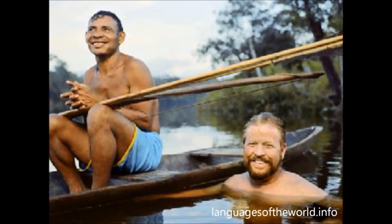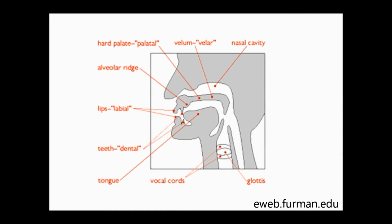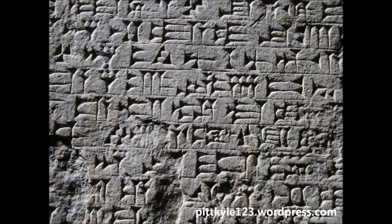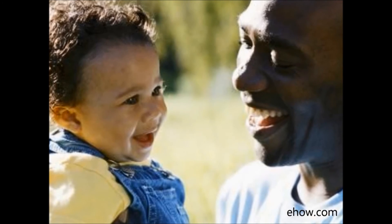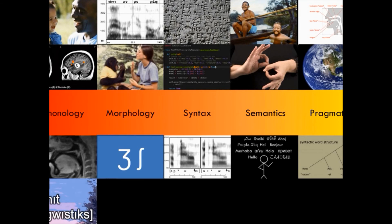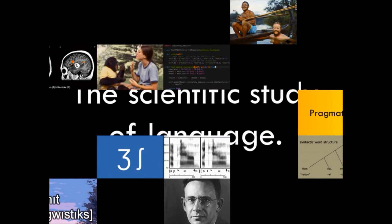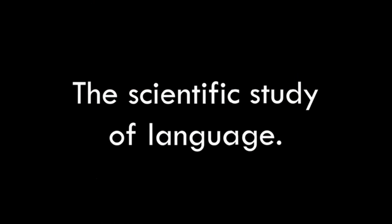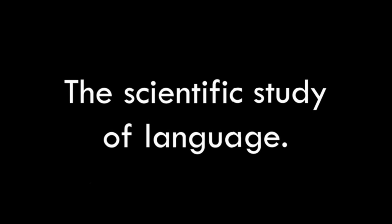Linguistics frequently combines elements of anthropology, neurology, acoustics, anatomy, history, biology, computer science, developmental psychology, and other fields. Guided by these areas, as well as the studies of phonology, morphology, syntax, semantics, and pragmatics, linguists systematically explore how and why languages work the way they do.